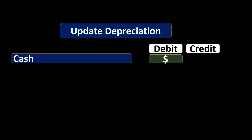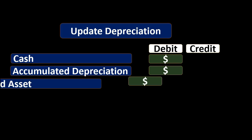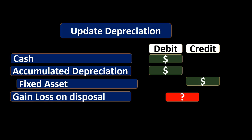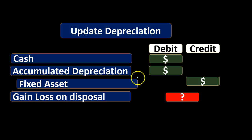Once the disposal is going to take place, we want to think first: is cash affected? If cash is affected, we would debit cash for the cash we received. Then we take the equipment off the books as well as the accumulated depreciation, the difference then being a gain or loss on the disposal. If we got more cash than the book value of the equipment, we would end up with a credit, or a gain. If we got less cash, we would end up with a debit, or a loss.